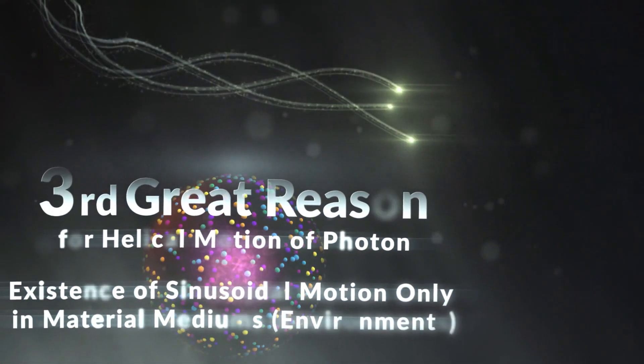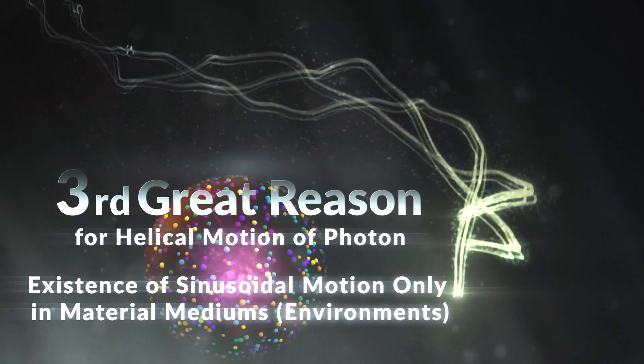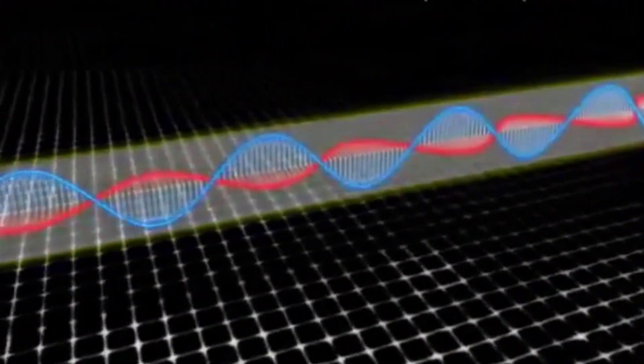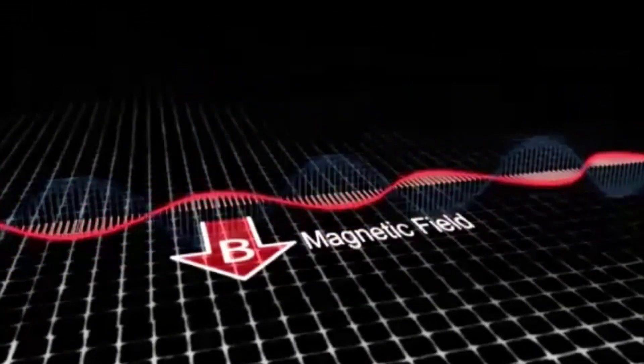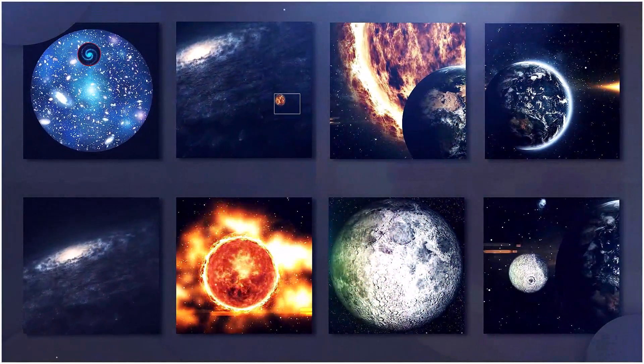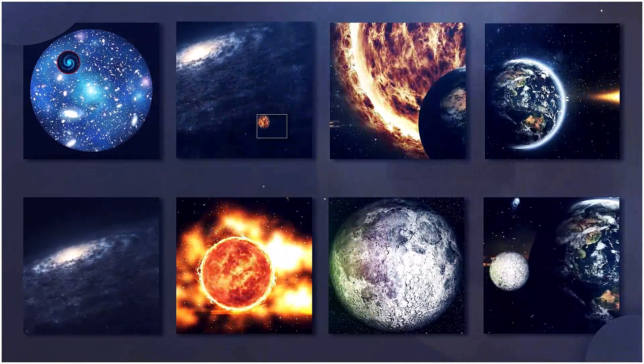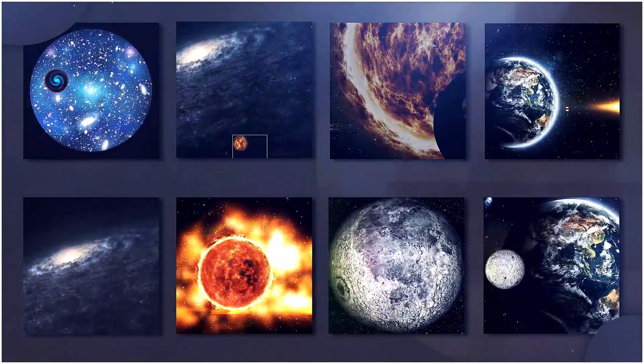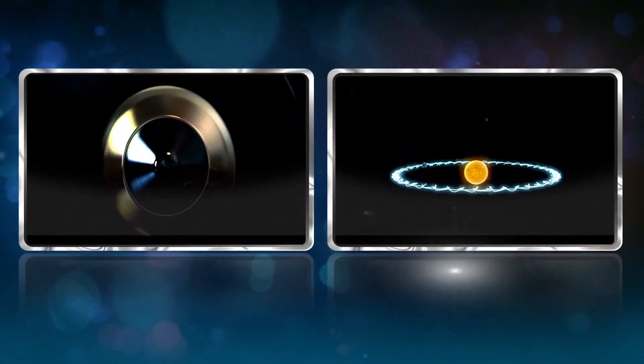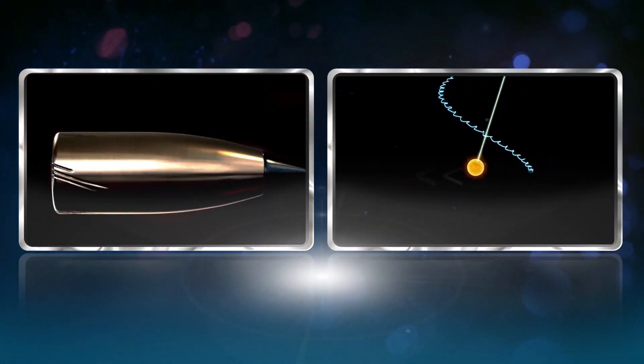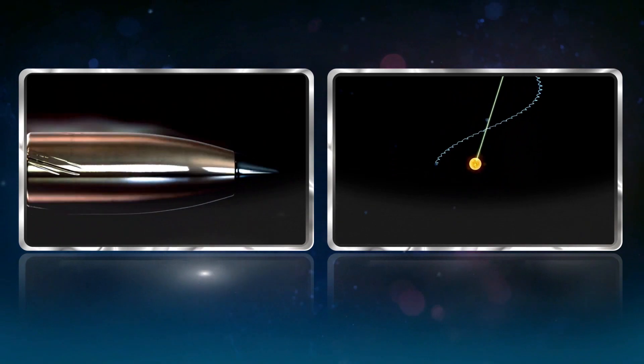3. Existence of sinusoidal motion only in material mediums. In non-material mediums, there is no sinusoidal motion. The rotational motion around the central axis simultaneously with the linear motion is common in many phenomena, such as the real motion of the earth around the sun in galaxy or a bullet coming out of the barrel of a gun.